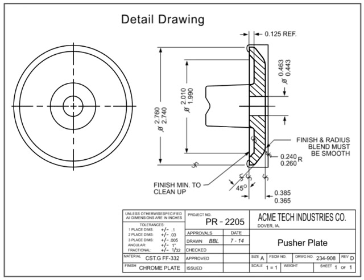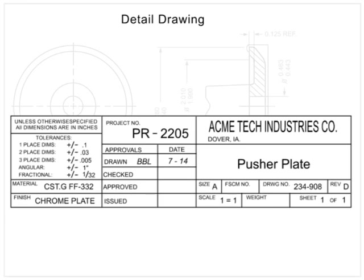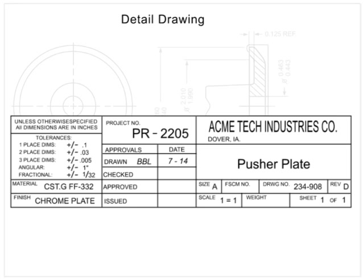Machine drawings can be developed using a cast part as the original material. In this drawing, the casting from the last example was used as the starting material. This machining drawing will remove material from the original casting and add the finishes required to produce a final product with its own unique part number. Only the dimensions necessary to convert the original cast part into the new part are required; the casting dimensions are not shown.